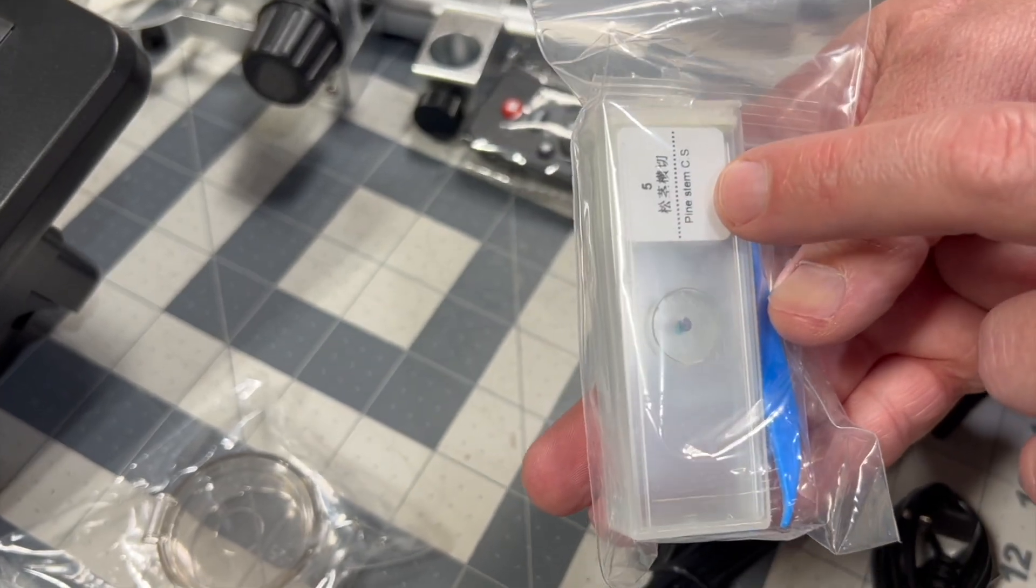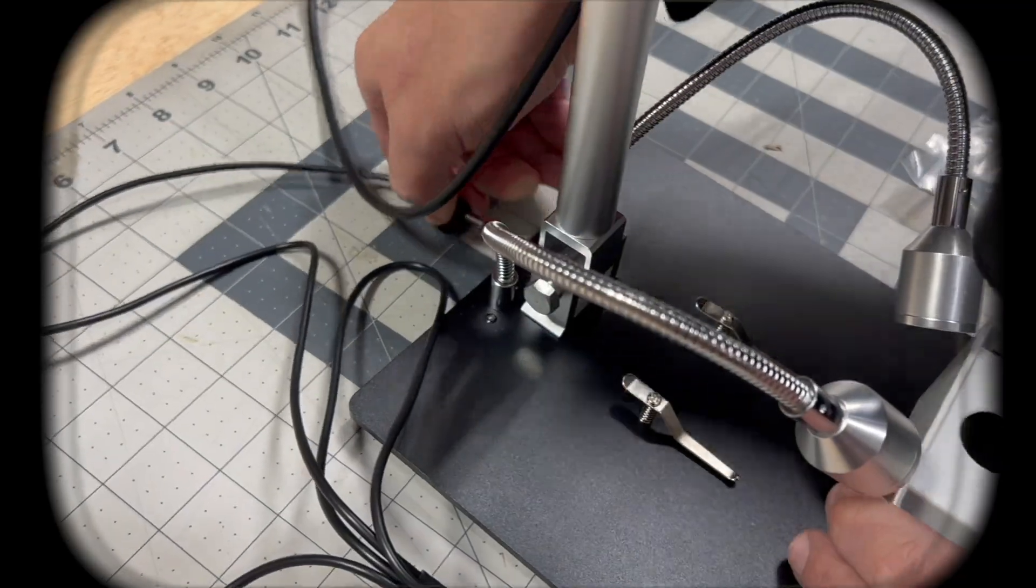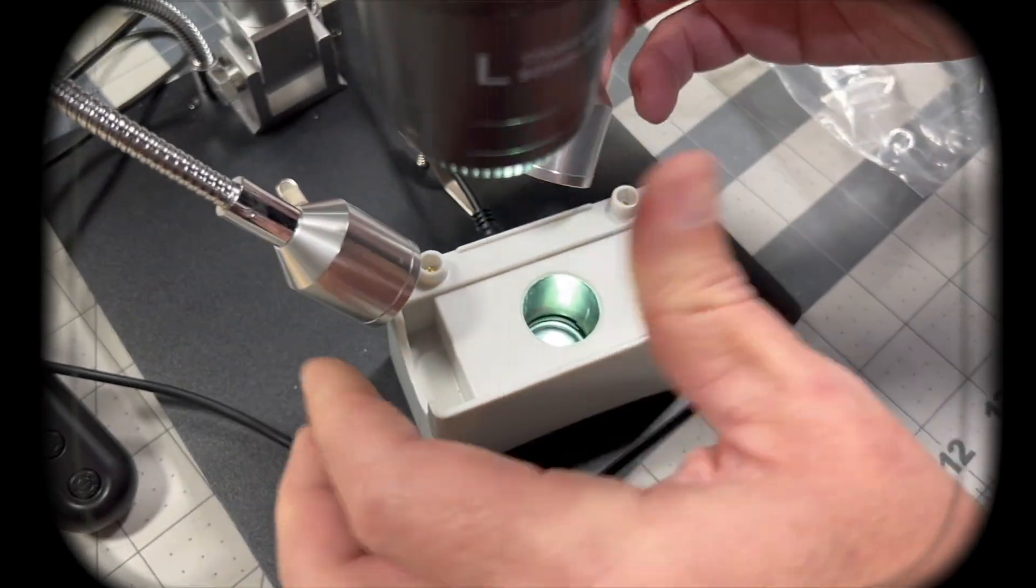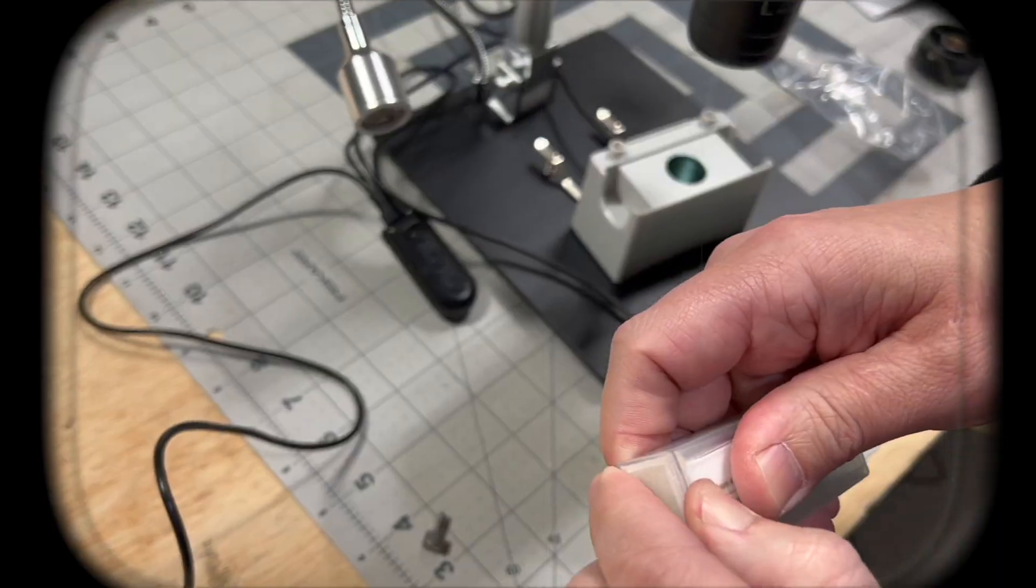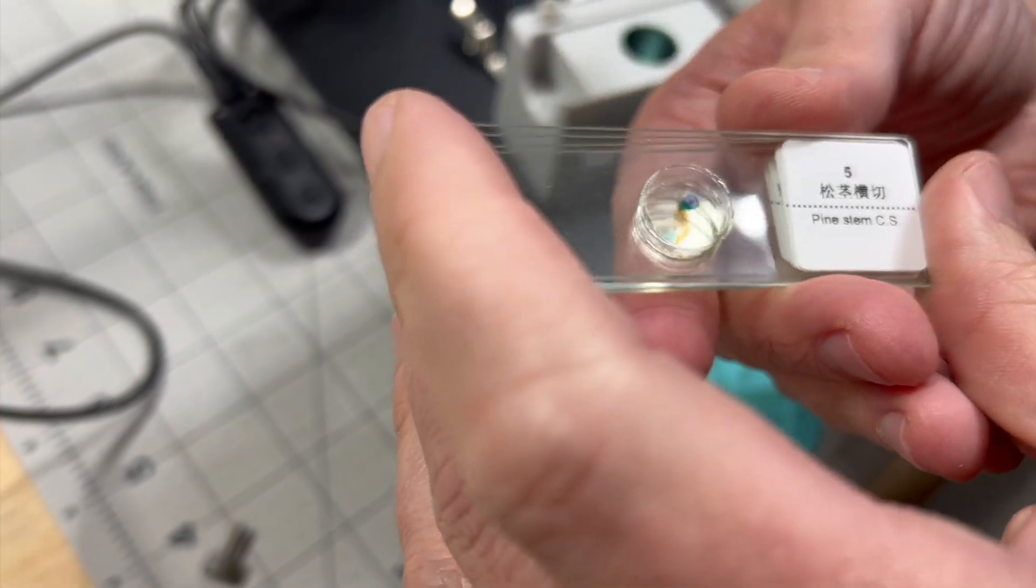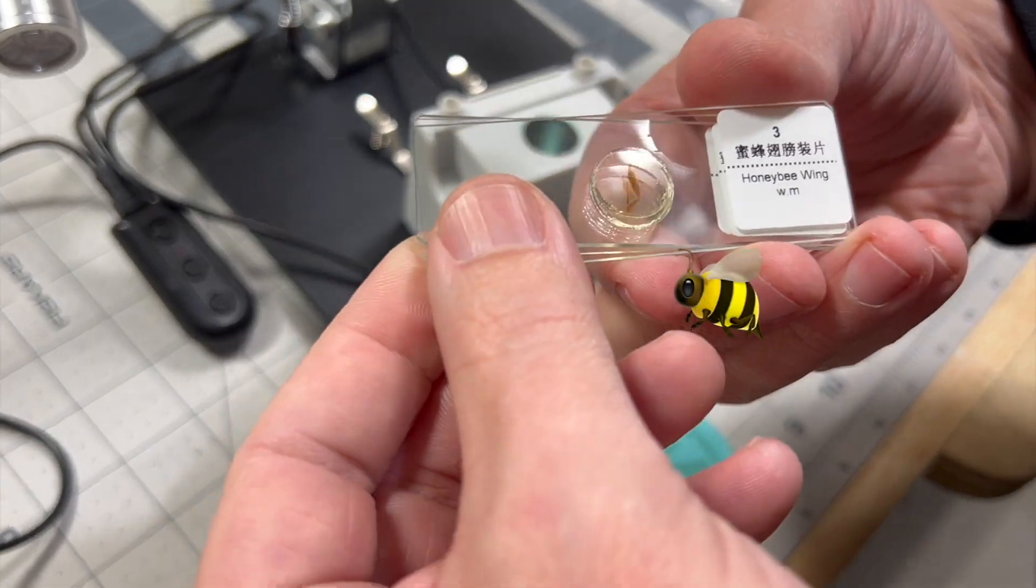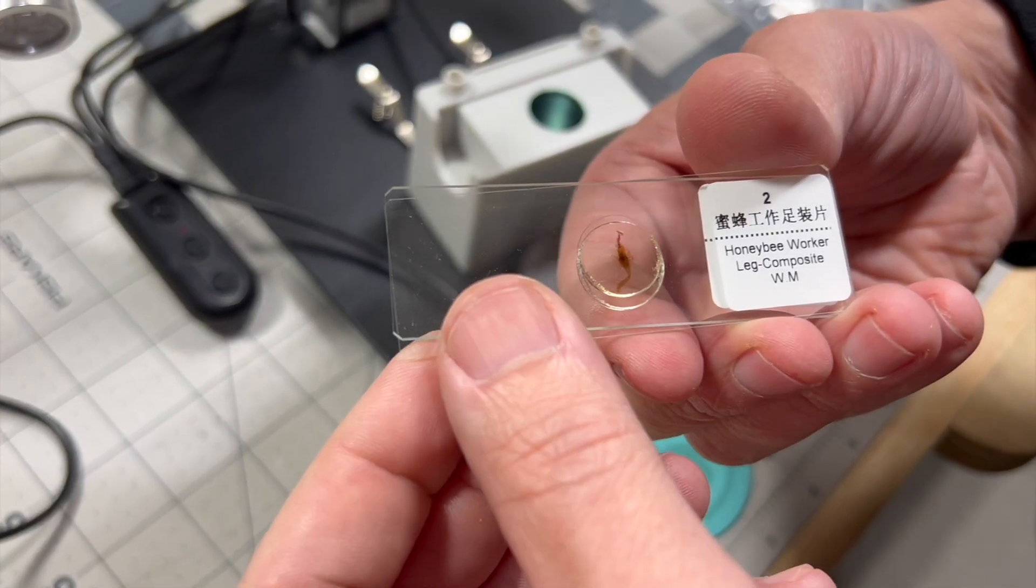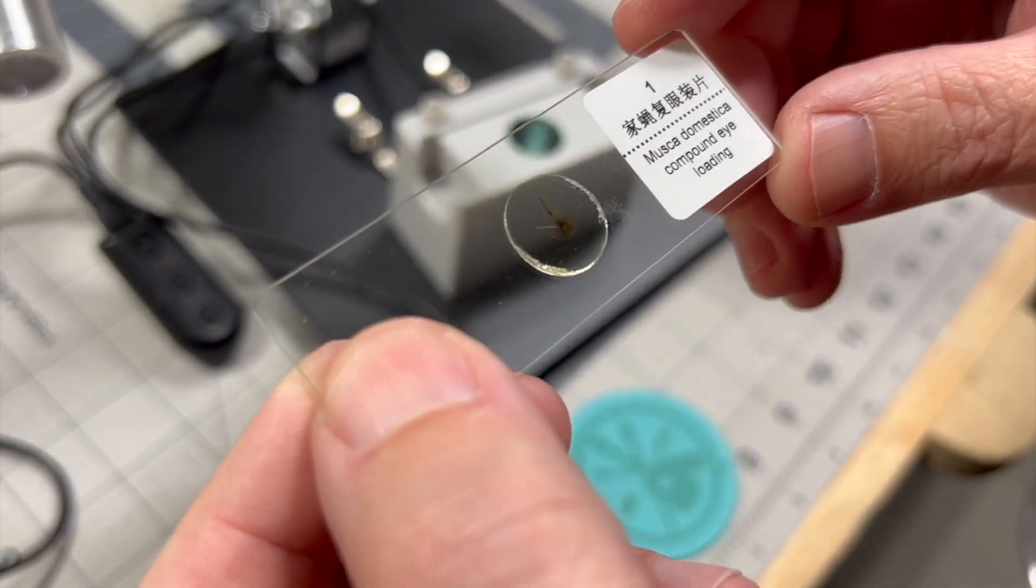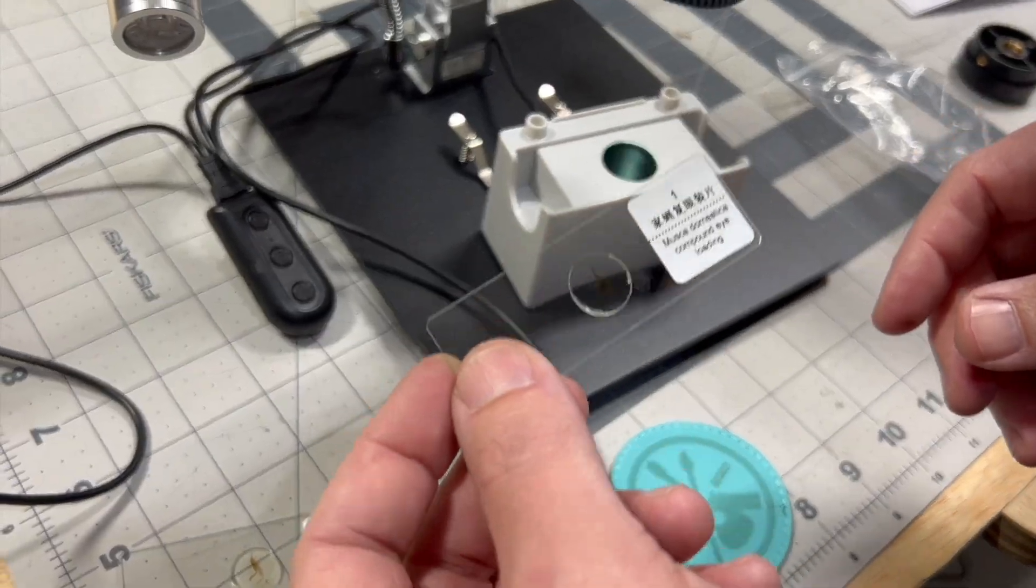Now let's look at some of those cool slides that it came with for the slide box. This is going to be our light source. Let's see what we got. What comes with this thing? So we got pine stem, epidermis of onion, interesting. Oh, honey bee wing, a honey bee worker leg and compound eye. I'm not sure what that is. Well, let's see.